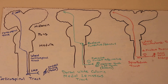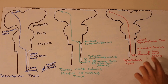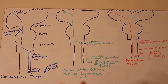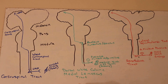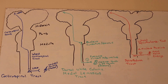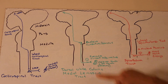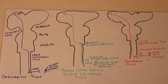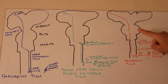Now the lateral spinothalamic tract handles pain, temperature, and also crude touch — so both this tract and the dorsal column handle crude touch. Unlike the dorsal white column medial lemniscus tract, which crosses over at the medulla, the spinothalamic tract crosses over immediately within the spinal cord.